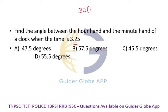30H minus 11 by 2M - that would be the angle. This is the formula for finding the angle. H means hour, M means minute.